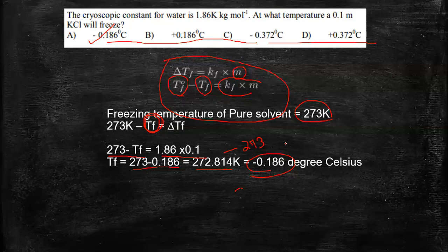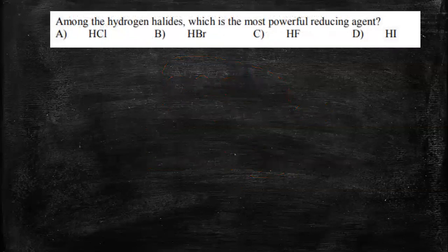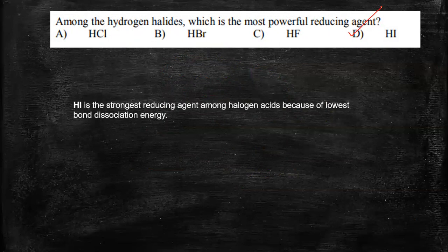Now let's move on to the next question. Among the hydrogen halides, which is the most powerful reducing agent? The option is option D, HI. And the answer is that it is the strongest reducing agent because of the lowest bond dissociation energy.